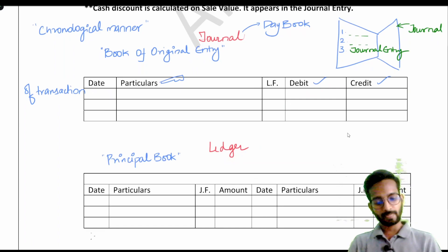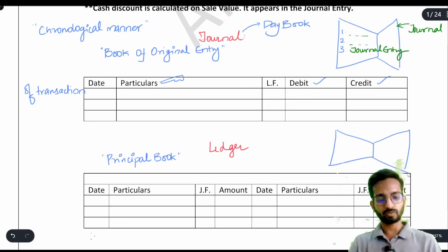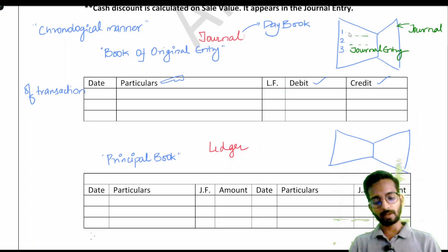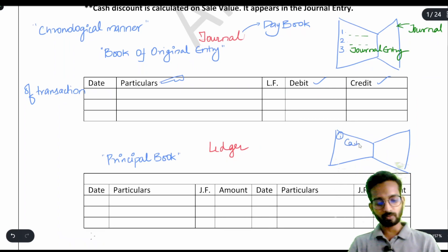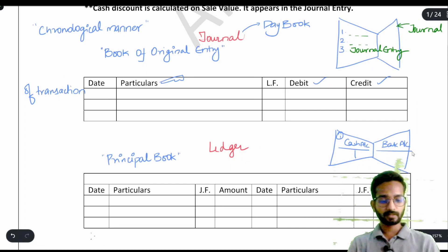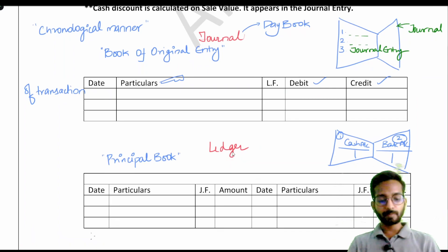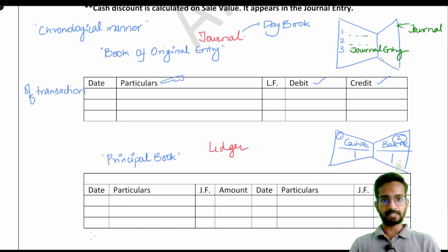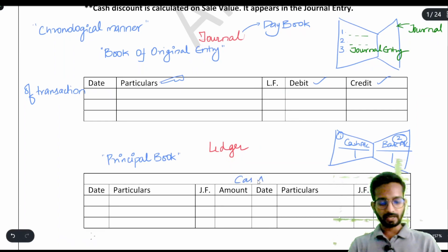LF means ledger folio, which we will discuss after understanding ledger. Ledger is again a book — it is a principal book. The difference is: in journal you write journal entries, whatever transaction takes place you write one by one. In ledger, you prepare specific accounts — for example, on the first page you prepare cash account, and on the next page you prepare bank account. In journal you record the transaction, then you post those journal entries into ledger accounts.